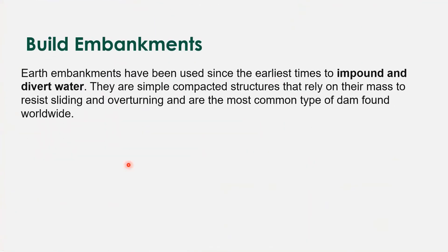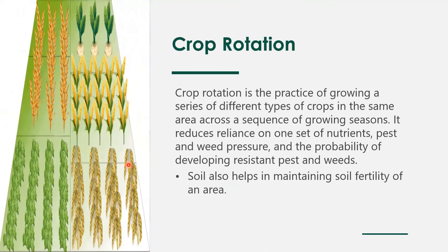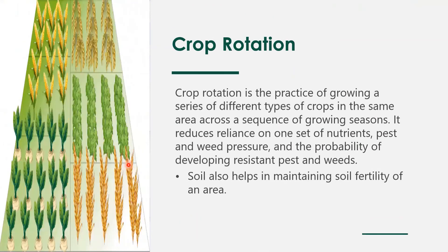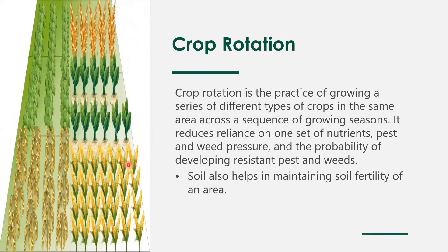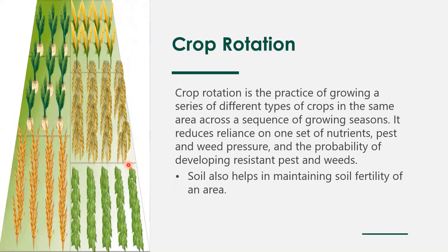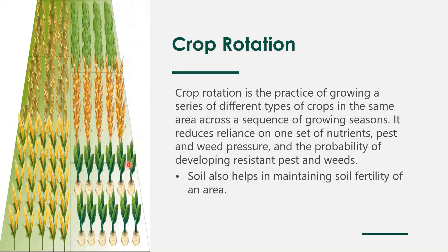Building embankments. Rocks are built along the side of the river banks, so in the monsoon seasons when the river gets flooded, this prevents the water from reaching where the farmers are growing their crops, and thus prevents soil erosion. Crop rotation means growing two crops in one patch of soil, and this also helps in maintaining the soil fertility of an area.